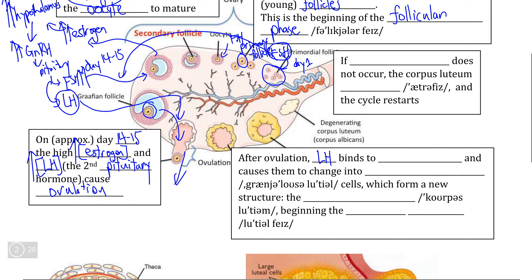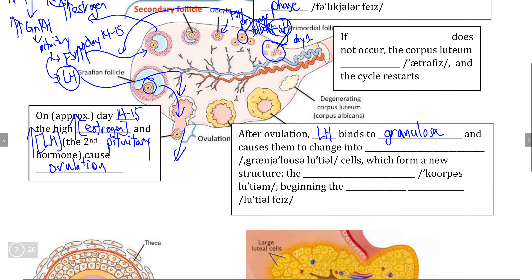The LH from the pituitary gland is going to bind to the receptor proteins that are found on the outside of the follicle, and is going to cause them to undergo a fairly radical structural change, causing them to develop into what we call granulosa luteal cells.